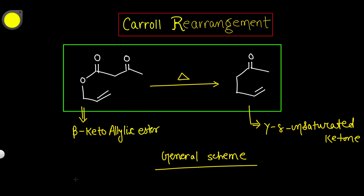Today we will talk about the Carroll rearrangement. It is basically a rearrangement reaction where some rearrangement will occur. The general scheme shows the substrate, which is a beta-keto allylic ester, and the product is a gamma-delta unsaturated ketone. The reaction condition is heat.